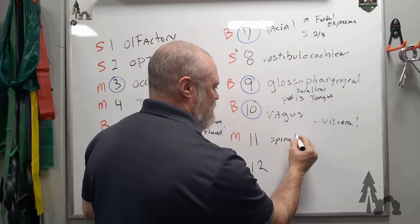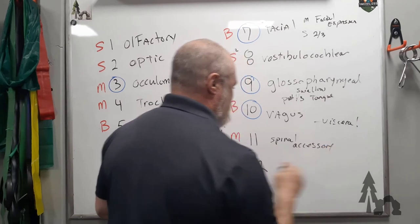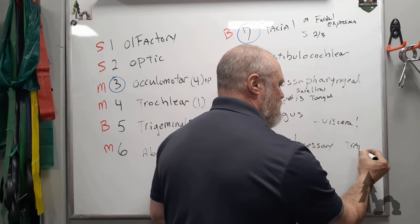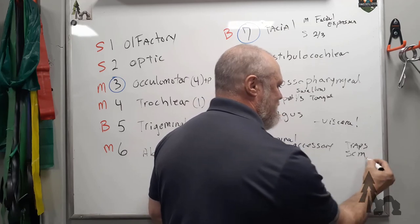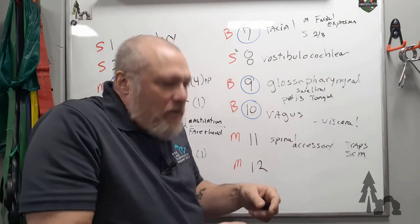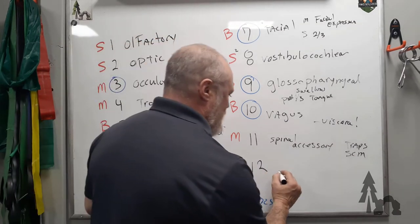Number eleven is the spinal accessory nerve. Spinal accessory nerve is a motor-only nerve. It's going to help you move your traps, your trapezius, and mainly your SCM—sternocleidomastoid muscle. So it's going to move my head around, help me shrug my shoulders, spinal accessory.